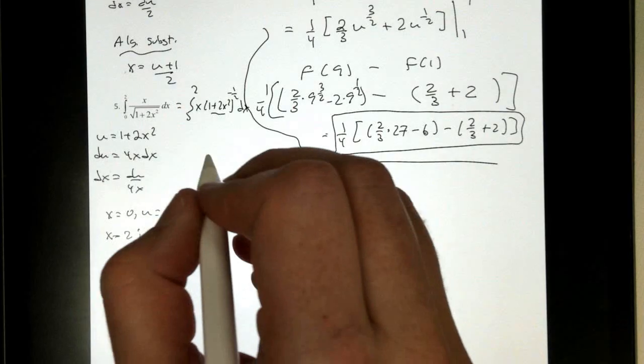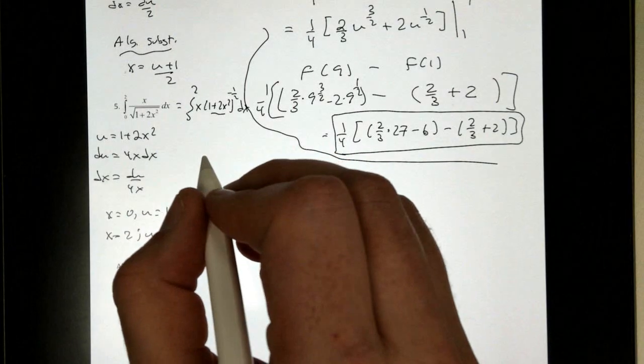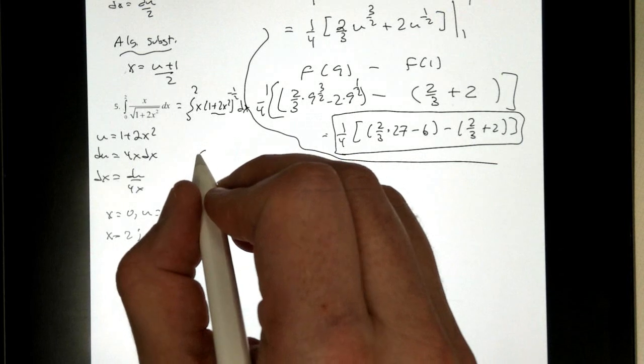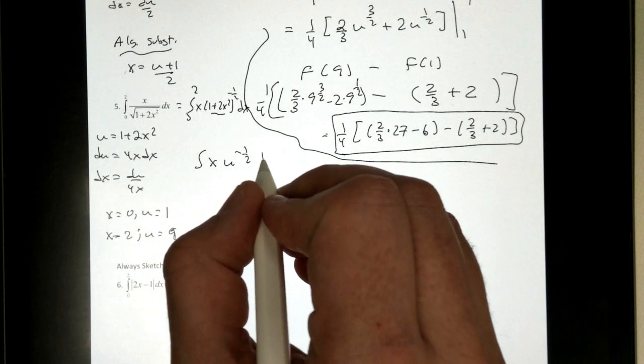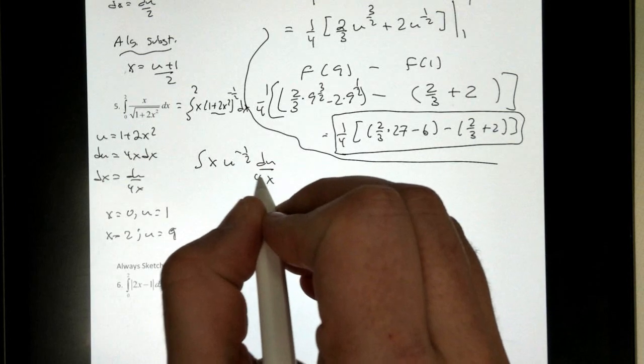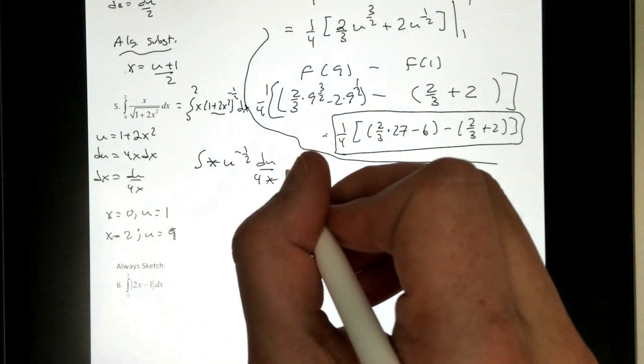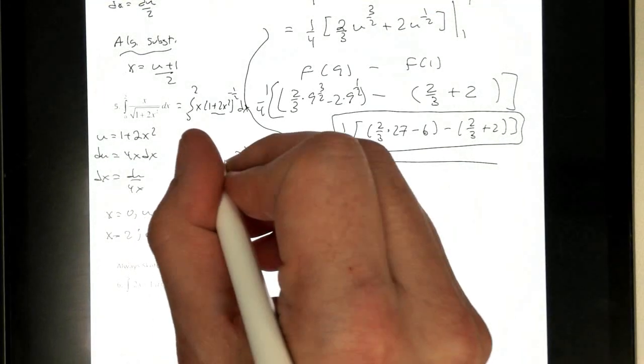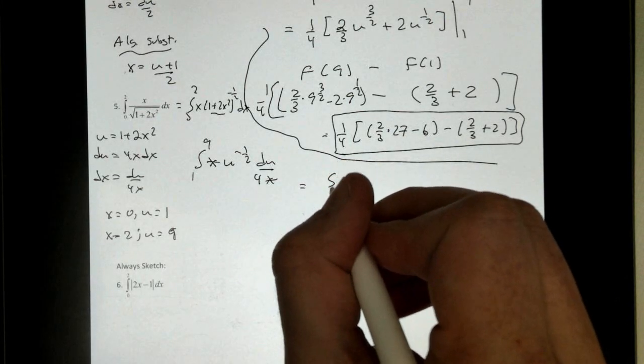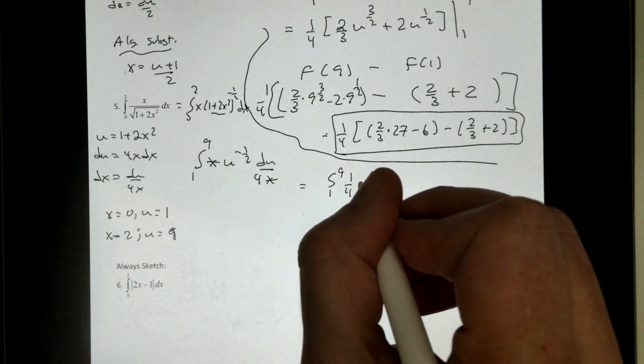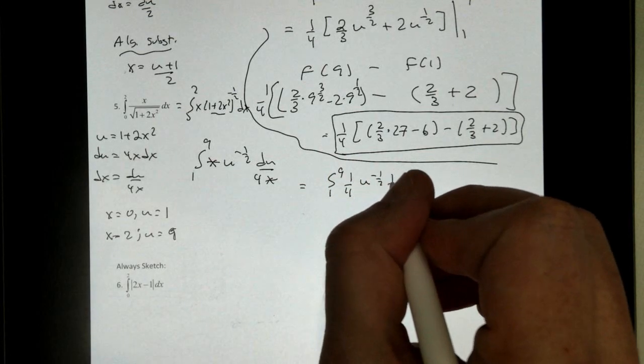So, when we solve this one right here, when we rewrite it, we would have x, u to the negative 1 half du over 4x. Again, those x's cancel out, which is what we want. And my new domain is from 1 to 9. Writing this out, we would get from 1 to 9. I'm just going to clean it up. 1 over 4, u to the negative 1 half du.